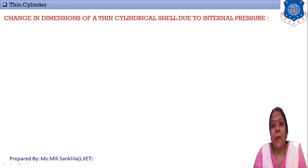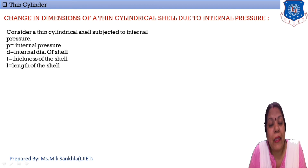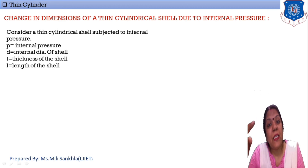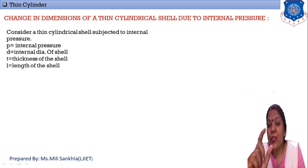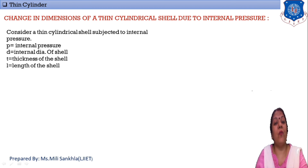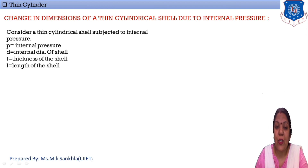That completes the second derivation for longitudinal stress. Now next: change in dimensions of a thin cylindrical shell due to internal pressure. In a thin cylinder, two major dimensions are: first, diameter, and second, length. If some pressure is given, we also consider volume change. So first dimension change is change in diameter (ΔD), second is change in length (ΔL), and third dimension change is change in volume (ΔV).